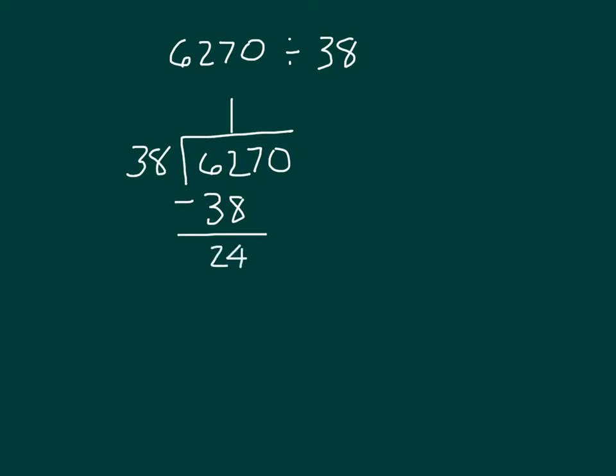At that point, we have 24, and that would be worth 2,400. We bring down the 7 at that point to regroup the 2,400s to the tens place, so we're talking about 247 tens, and we're dividing that by 38.